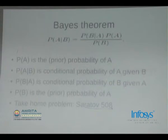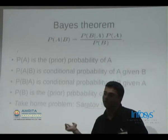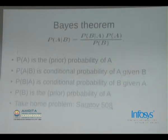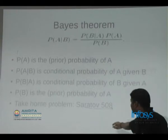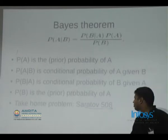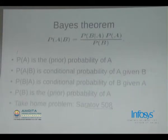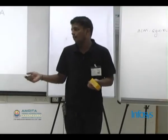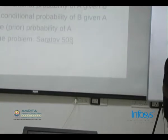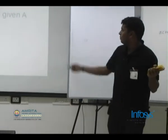Bayes theorem is covered in high school probability. The formula is: probability of A given event B equals probability of B given event A, times probability of A, divided by probability of B. I've given a take-home problem — how many of you know of the Saratov Online Judge? It has a very nice collection of questions, fairly small in number but very tricky and well-known for the level of problems. Check problem number 508 when you have time.